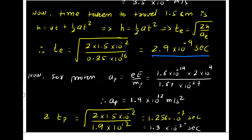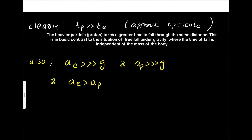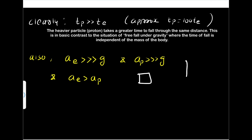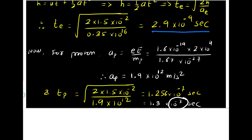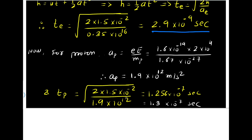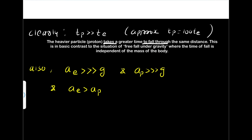The proton takes more time because 10⁻⁷ is larger compared to 10⁻⁹, so the proton falls more slowly while the electron falls with very large speed. The acceleration of the proton is less compared to the acceleration of the electron. This is analogous to having two objects — one lighter and one very heavy — where applying the same force causes the lighter one to accelerate more. The time taken by the proton is about 100 times the time taken by the electron to cover the same distance. The heavier particle, the proton, takes greater time to fall through the same distance.